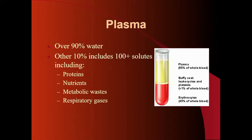We'll start with the plasma. Plasma is the reason that blood is a liquid, and plasma is over 90% water. The other 10% that constitutes plasma includes over 100 different solutes dissolved within the plasma. These things include proteins, nutrients, metabolic wastes, and respiratory gases.